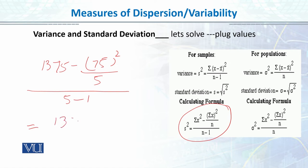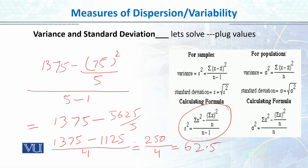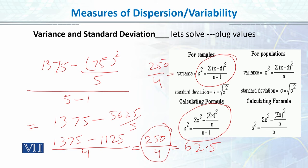This gives us 1375 minus (5625 divided by 5), which equals 1375 minus 1125, giving 250, divided by 4, which equals 62.5 — exactly the same value as before. So both formulas — summation of (x minus mean) squared divided by n-1, and the x-squared formula — give the same variance of 62.5. Variance represents every score's distance from the mean, squared and then divided.